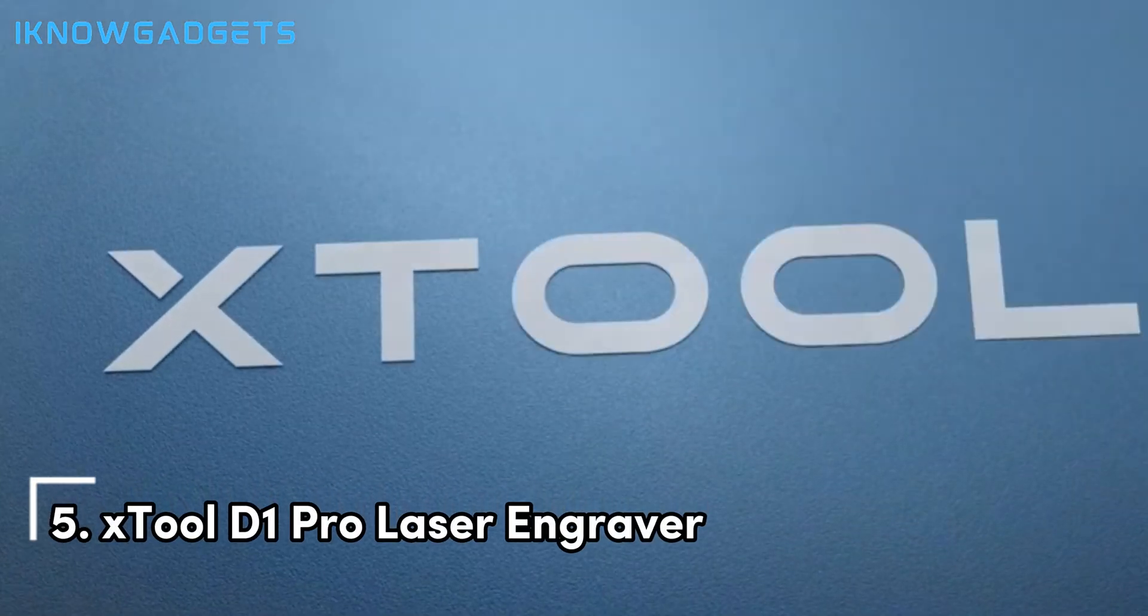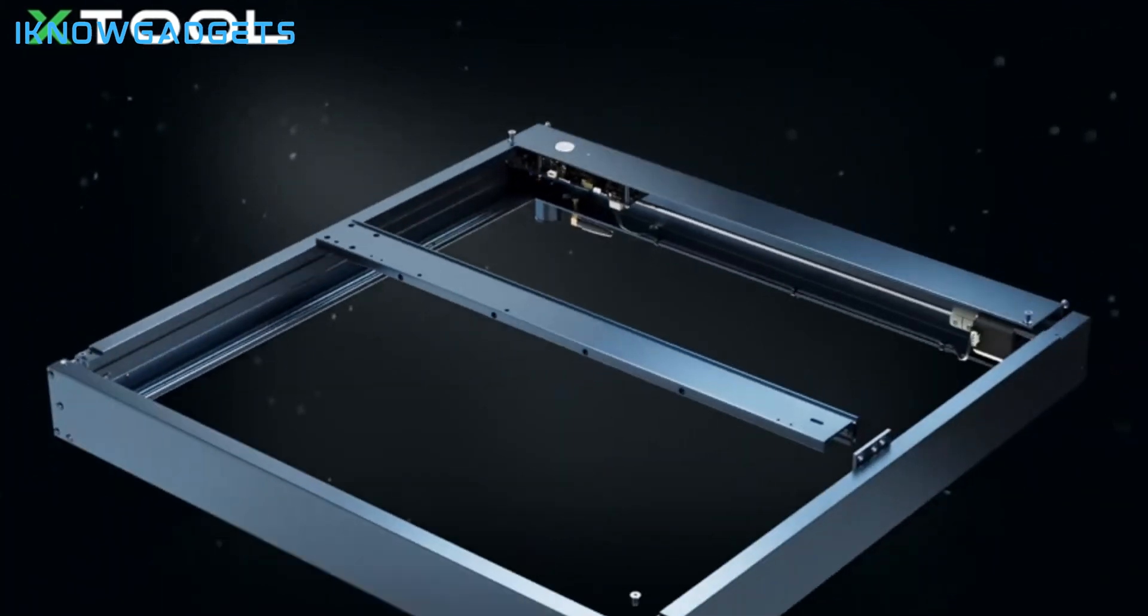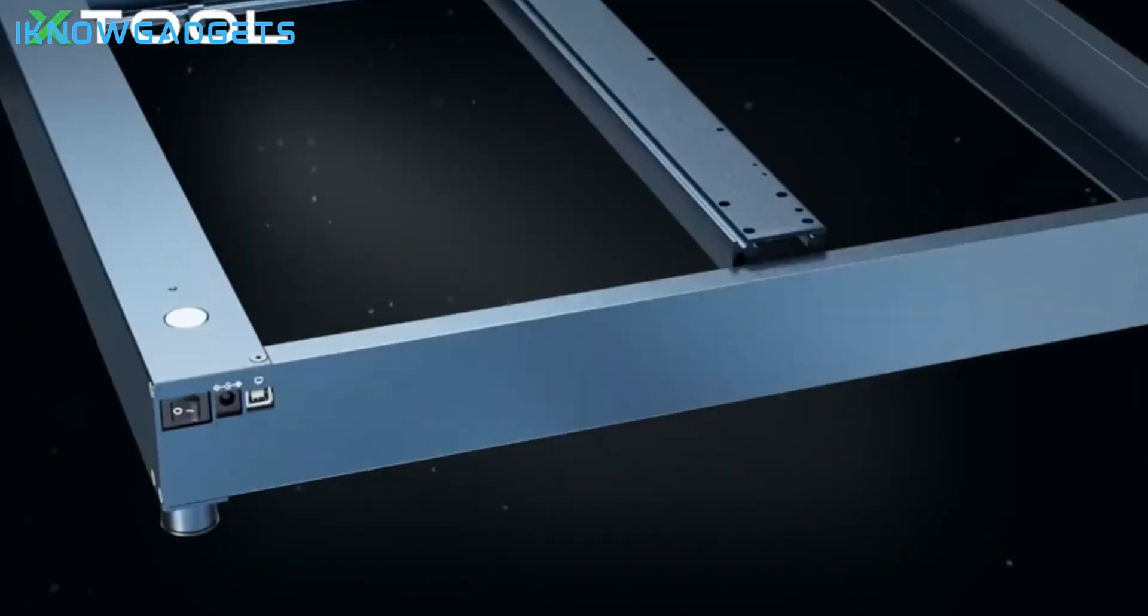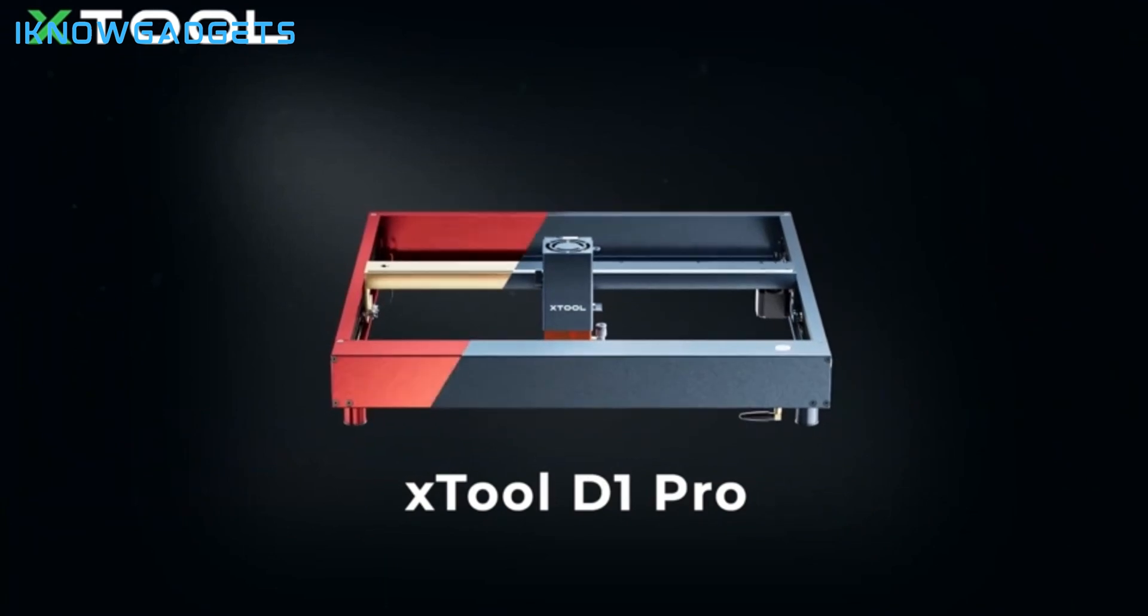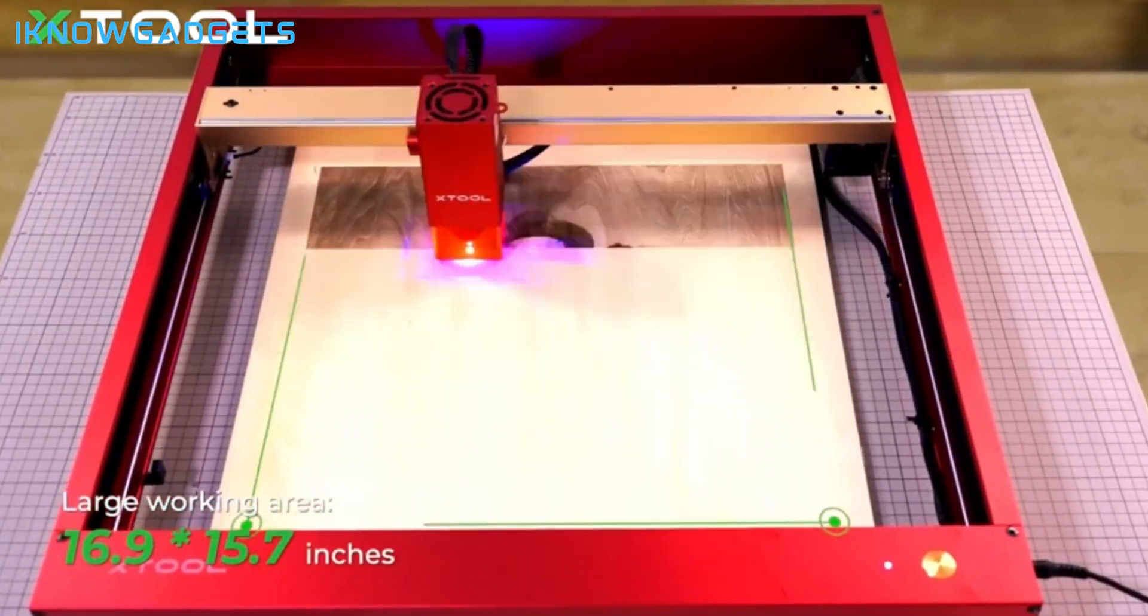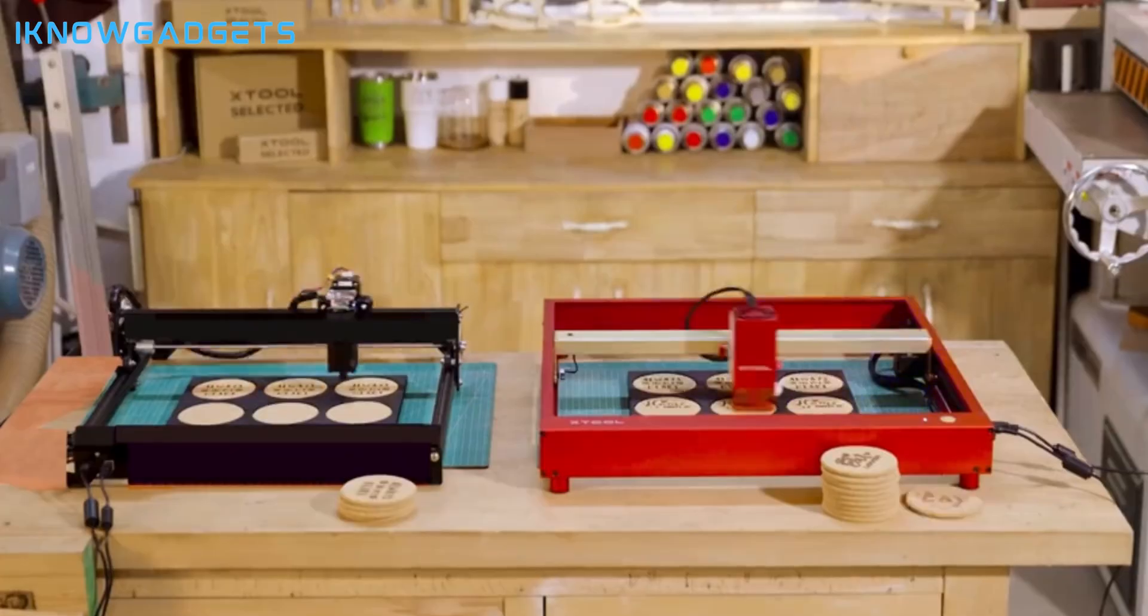Kicking off our list at number five is the X-Tool D1 Pro Laser Engraver. This 10W laser cutter and engraving machine brings efficiency and precision to the table. Let's uncover the secrets behind the X-Tool D1 Pro. Efficient engraving and cutting with a 24,000 millimeters per minute speed, perfect for small businesses and side hustles.